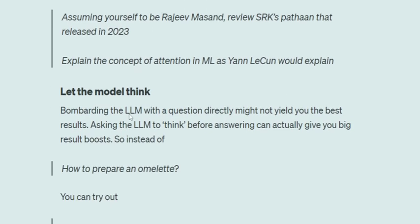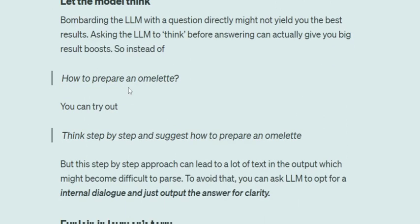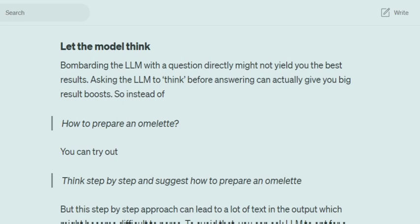The third one is 'let the model think.' Bombarding the LLM with any question might not yield the best answer. You need to ask the LLM to take its time, think, and then give you an answer. So instead of asking 'How to prepare an omelet?' you can try 'Think step by step and suggest how to prepare an omelet.' A downside is that when you ask it to think step by step, it will give you the whole reasoning output, which you may want to discard. You can extend this prompt to say 'Have an inner monologue and don't print the steps, just give me the answer.' Giving the model time to think will improve your answers by a good margin.